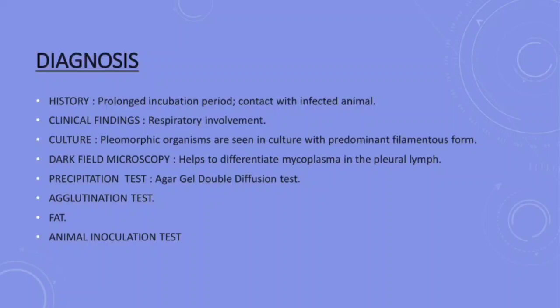Number five: Precipitation test — the agar gel double diffusion method is a reliable test. Number six: Agglutination test — this test can be adopted in the field on suspected populations and is also useful for screening out the vaccinated population. Number seven: Fluorescence antibody test — this test has been used successfully for detection of mycoplasma antigen in culture and antibody in sera. Then comes the animal inoculation test — subcutaneous inoculation of suspected material from an affected cow will produce large edematous swelling at the site.